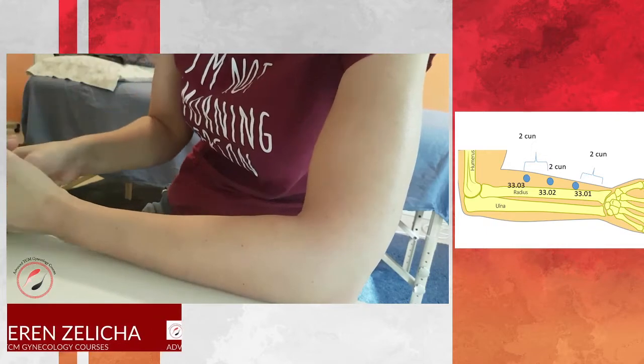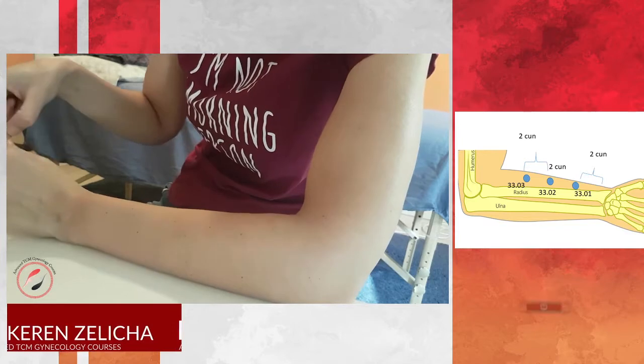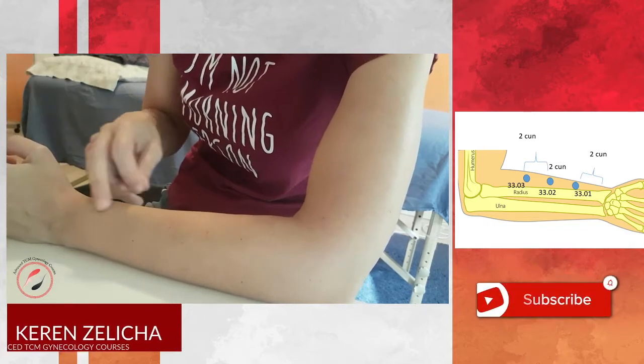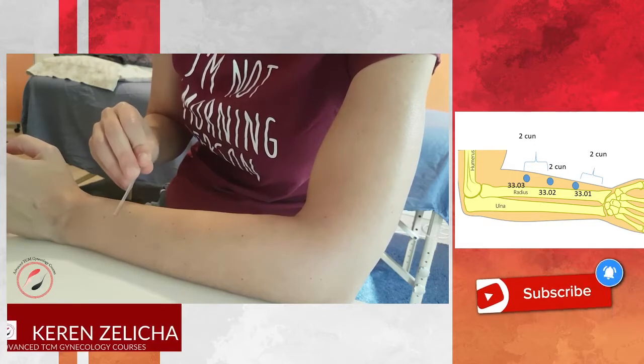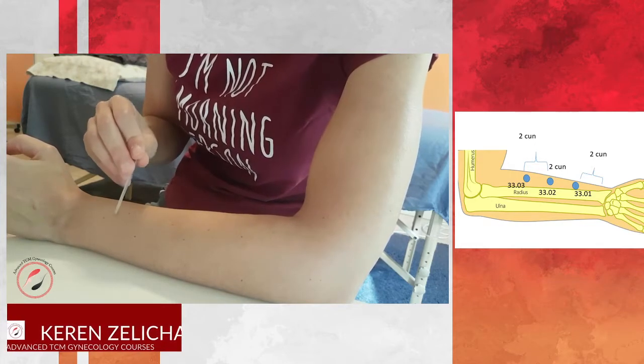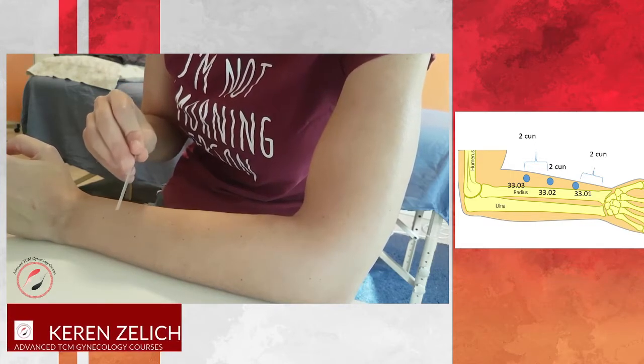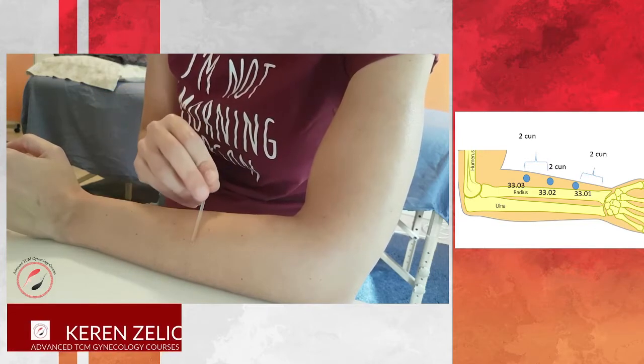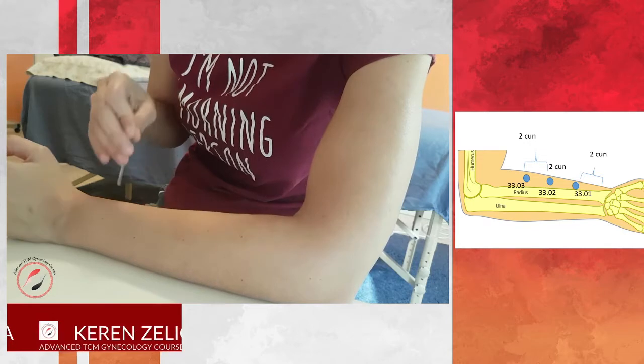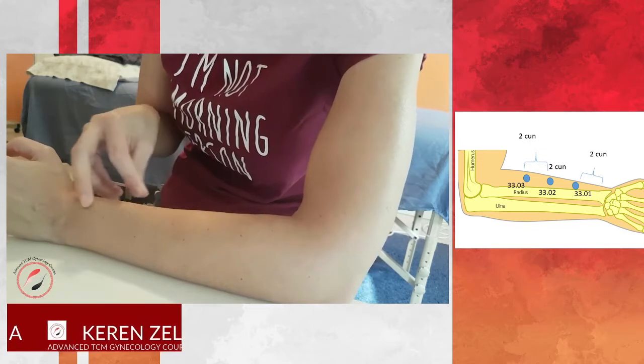As I mentioned, it's 2, 4, and 6 cun above the wrist on the large intestine meridian. When we puncture, we need to remember that the angle of the needling should be towards the triple warmer meridian.